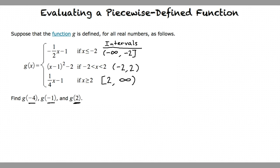Let's start with negative 4. Which domain does negative 4 fit into? It fits in the first part because it is less than negative 2. Yes, you're right. So we will substitute negative 4 in the first part for x. Negative 1 half times negative 4 minus 1 equals 1. So g of negative 4 equals 1.